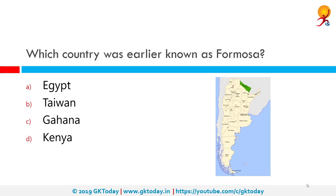Which country was earlier known as Formosa? The correct answer is Taiwan. The Republic of Formosa was a short-lived republic that existed on the island of Taiwan in 1895, between the formal cession of Taiwan by the Qing dynasty of China to the Empire of Japan by the Treaty of Shimonoseki and its takeover by Japanese troops.